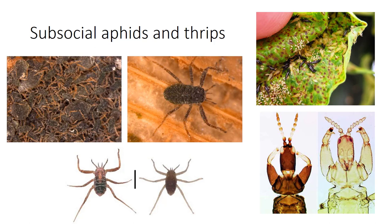Soldiers are scorpion-like as a result of body sclerotization and enlarged anterior legs, and will attack intruders. Some gall thrips produce a soldier morph and are considered as having primitive eusocial behavior since they often live communally, cooperate in brood care, and forage with their young. Sex determination is through haplodiploidy, with galls founded by a single female establishing multiple generations.